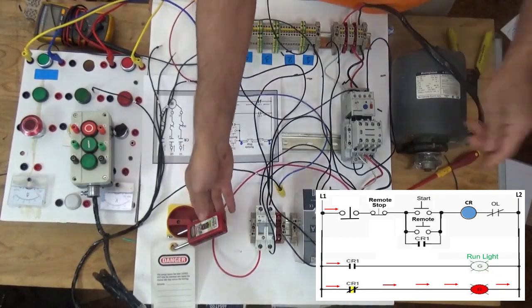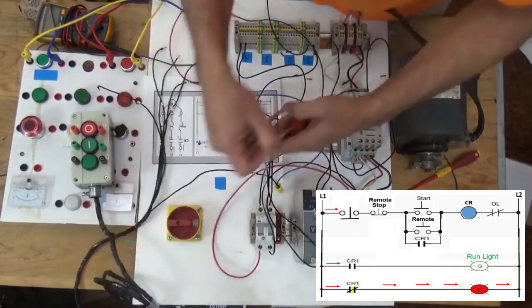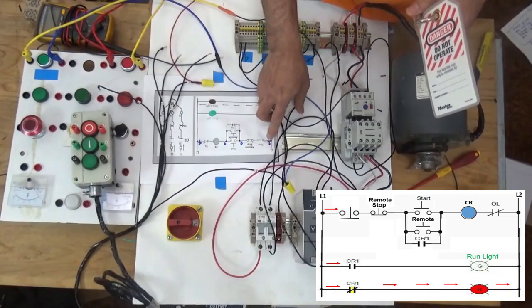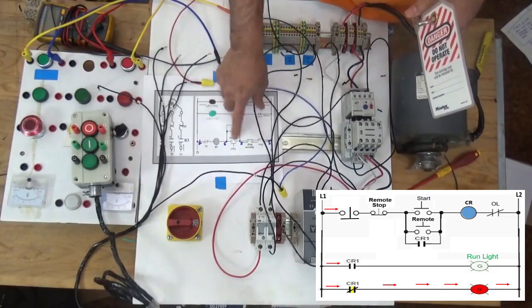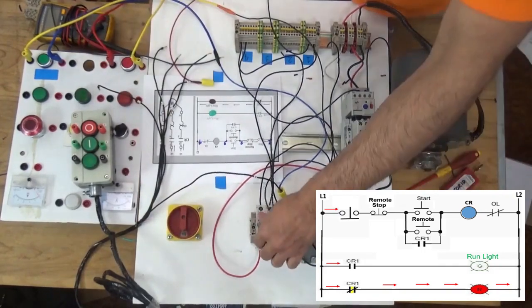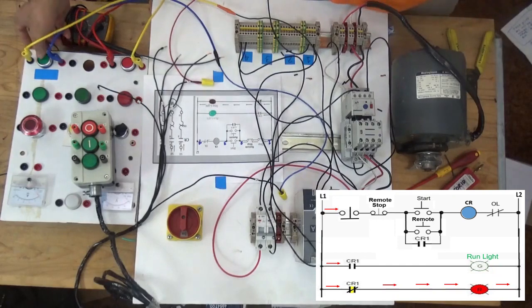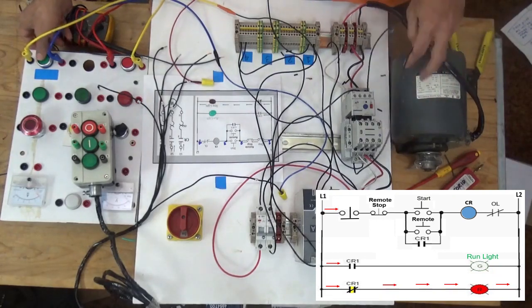Now we are going to try if it works because it's already a complete circuit. From line 1 going to line 2 for the first run. Let's try to start if this motor will run.